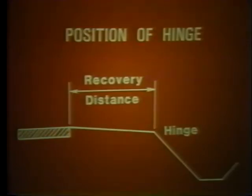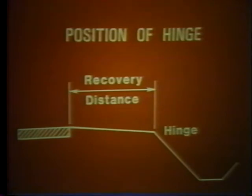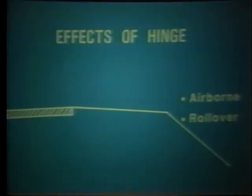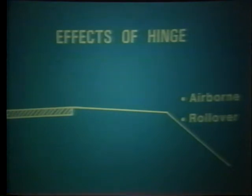The distance between the travel lane edge of a road and the point where the slope begins greatly influences safety. A steep slope located right beside the travel lane is not as safe as the same slope located 20 feet from the roadway edge. The greater distance gives drivers space to regain steering control before reaching the slope. When a vehicle travels over the hinge point, two possibilities can occur: one, the vehicle can become airborne with all wheels leaving the ground; two, it can roll over either on its side or end over end.